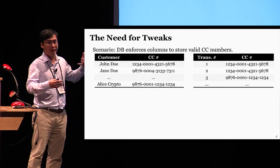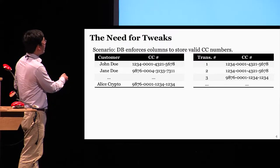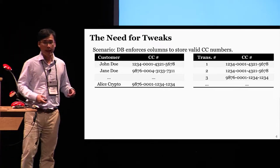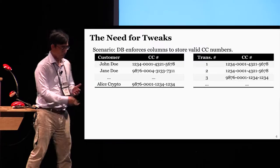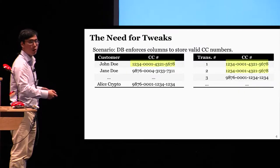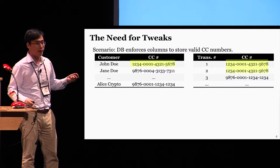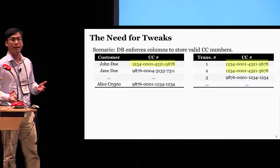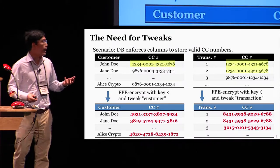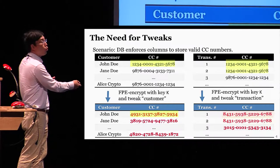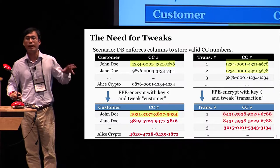Let me elaborate why there is a need for tweaks via an application. Suppose that in a database we encrypt customer names together with their credit card numbers in one table, and in another table we store transaction numbers together with the corresponding credit card numbers. If we combine these two tables, you can realize that John Doe made transactions one and two. Even if you FPE encrypt these tables under the same key and tweak, the linking process can still be done because FPE is deterministic. In contrast, if you FPE encrypt them with different tweaks, you can still see that transactions one and two were made under the same credit card number, but there is no way to link that back to John Doe. So by using tweaks, you increase the security of FPE.